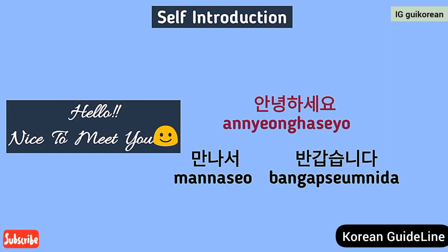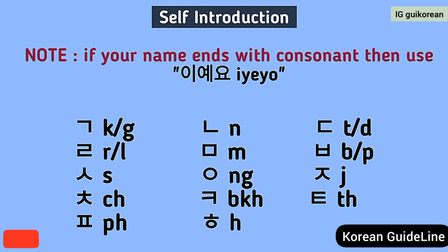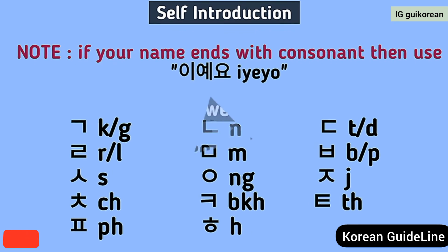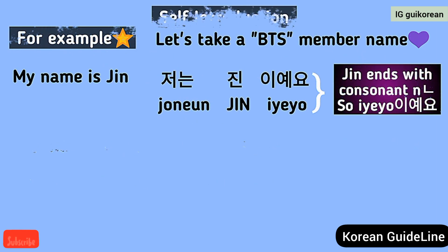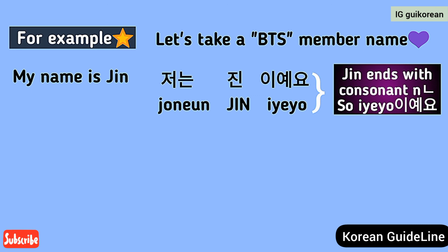Our next expression is 'my name is.' Here we have to check whether our name ends with a vowel or a consonant. If our name ends with a consonant, we add 이에요 (ieayyo). You can take a screenshot or grab your notebook to write this down. For example, BTS member Jin — Jin ends with the consonant N, so we say 저는 진이에요 (jonen jin ieayyo). Repeat after me: jonen jin ieayyo.